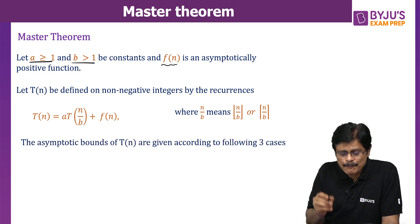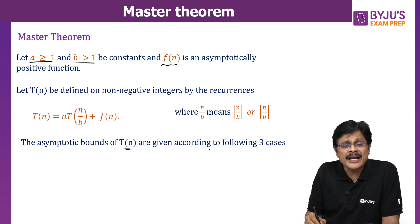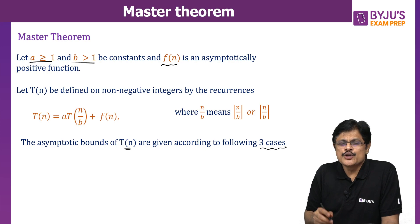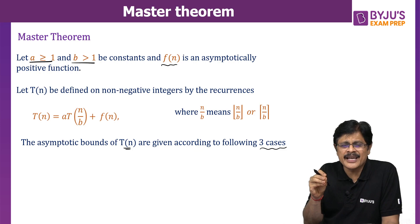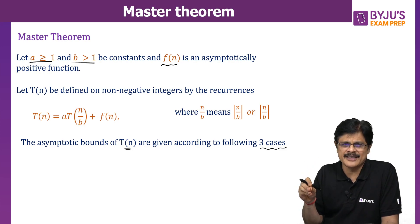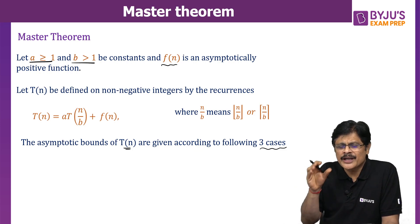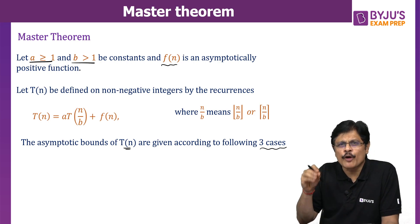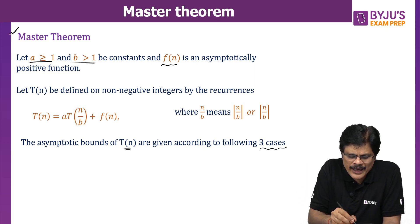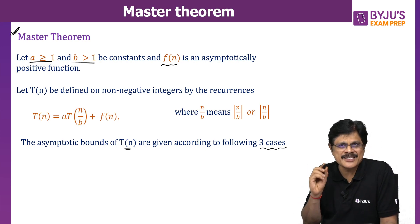The asymptotic bounds of T(n) are given according to three cases. So the time complexity based on the divide and conquer recurrence relation together with the following three cases is what is known as Master Theorem.